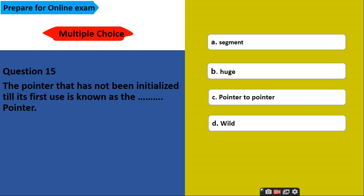The pointer that has not been initialized till its first use is known as the dash pointer. Options are segment, huge, pointer to pointer, wild pointer. And the correct answer is D, wild pointer. This pointer has not been initialized till its first use. So this is known as wild pointer.